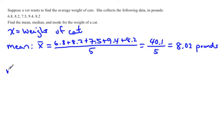To find the median, you first have to put the data in order. That's very important. If you don't put the data in order first, then you would have different medians depending on what order you put them in. So make sure your data is in order from smallest to largest. So we've got 6.8, 7.5, 8.2, 8.2, and 9.4.